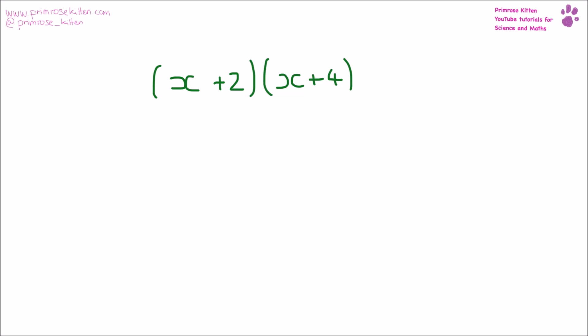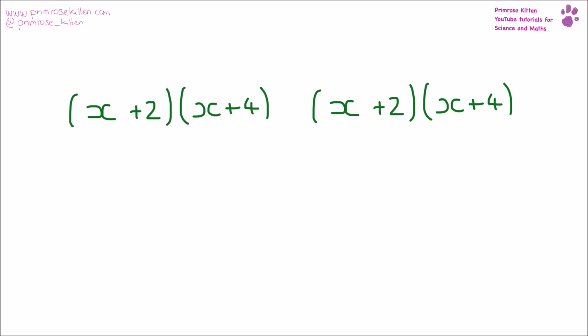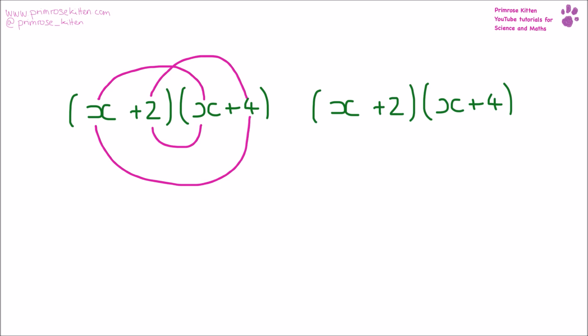For this type of expanding brackets, there are a number of ways that different teachers like the arrows drawn — I'll show you both. You can either draw your arrows with inside ones to outside ones, or from one term to the other. I prefer the method on the left because you can make a smiley face, but many teachers prefer the method on the right because it gives things in the correct order. Good practice is to cross off each line once you've used it so you know you've done it.